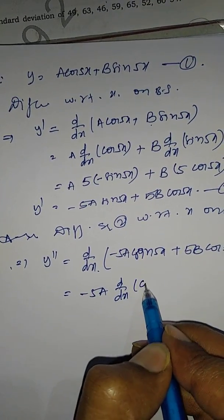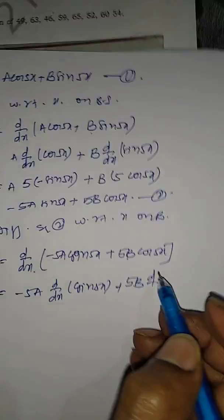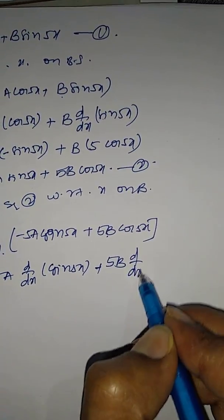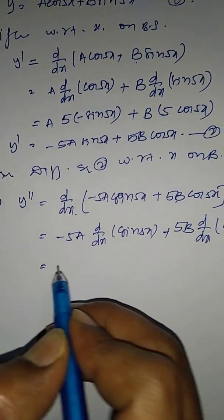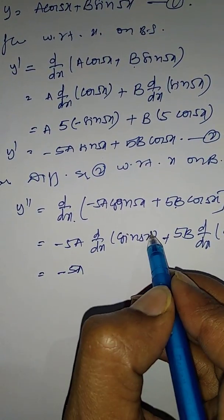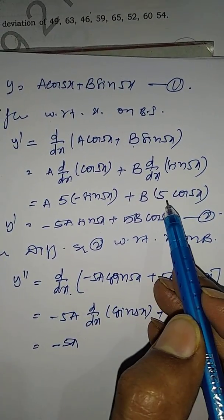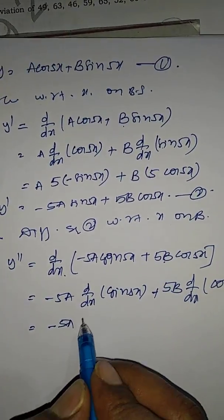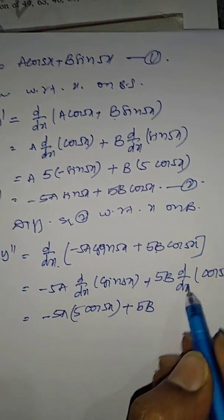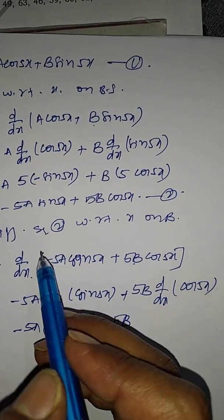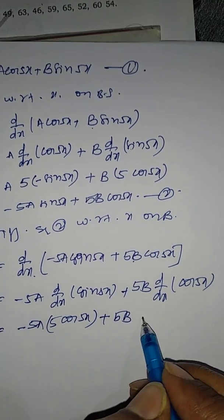So y'' = −5a·(d/dx of sin(5x)) + 5b·(d/dx of cos(5x)). d/dx of sin(5x) = 5·cos(5x) and d/dx of cos(5x) = −5·sin(5x). Therefore y'' = −25a·cos(5x) − 25b·sin(5x).